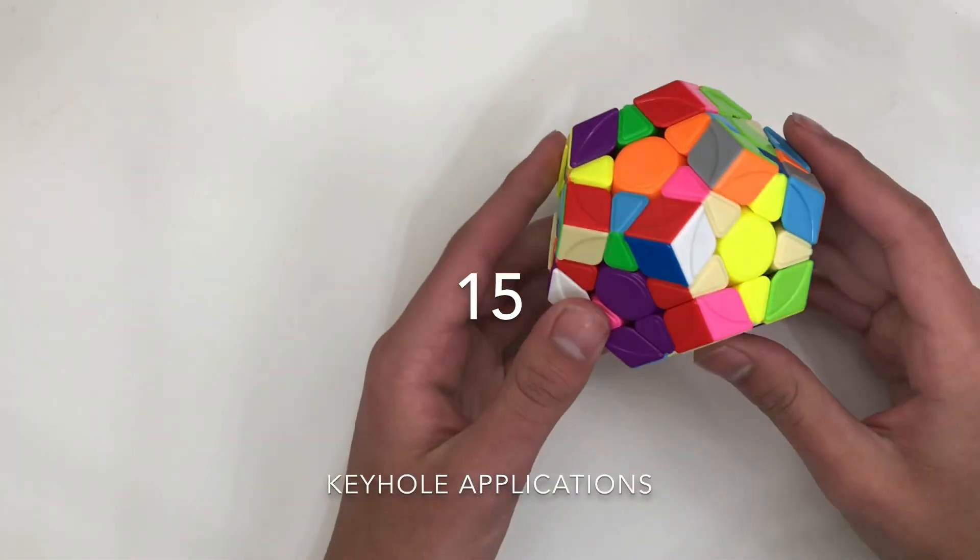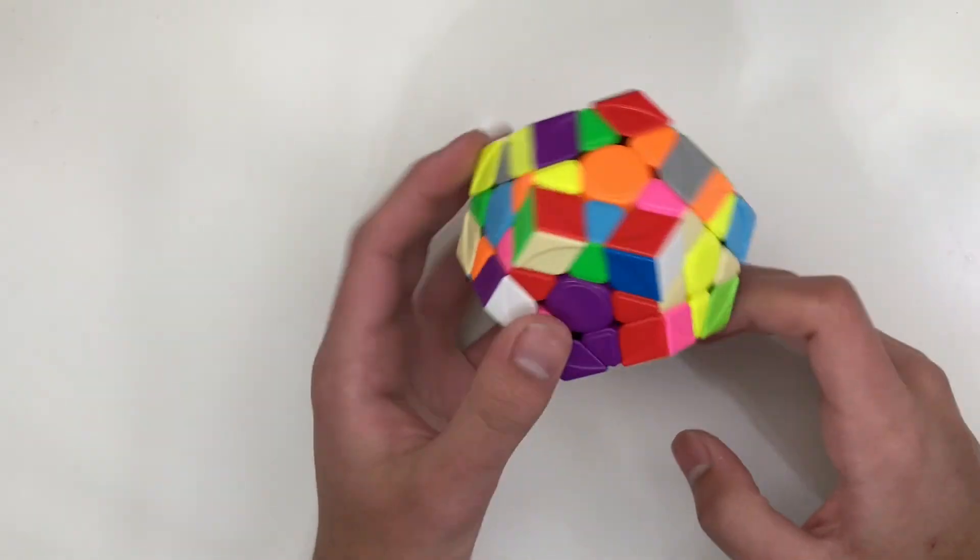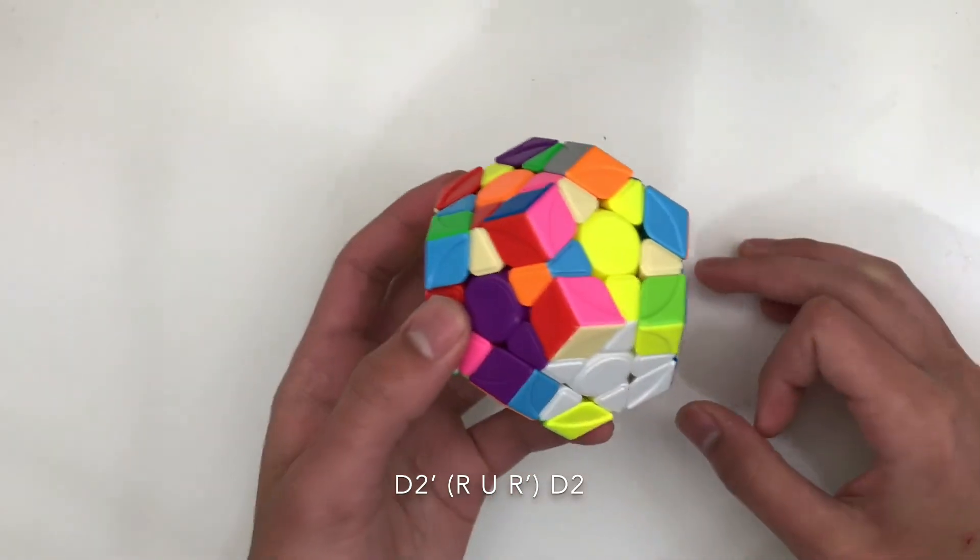Keyhole can be quite useful in Megaminx. For example, if we wanted to solve this pair, we know we have this edge solved and we have this corner. We can just do like that.